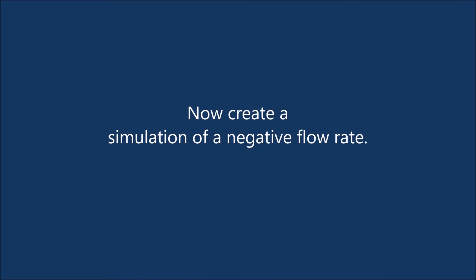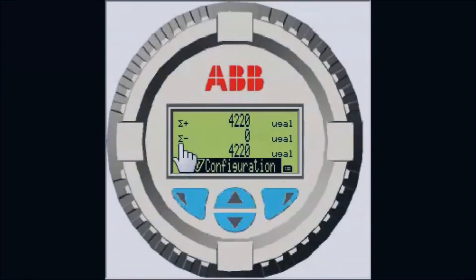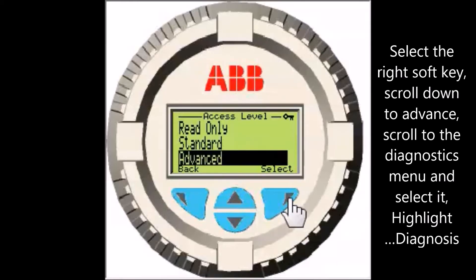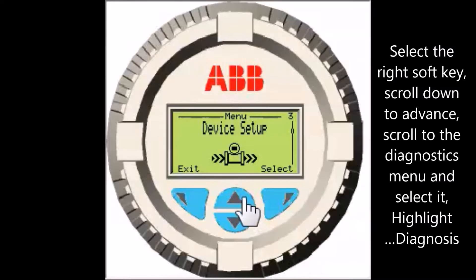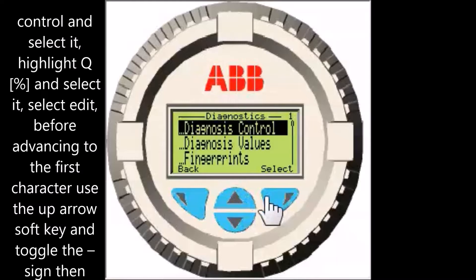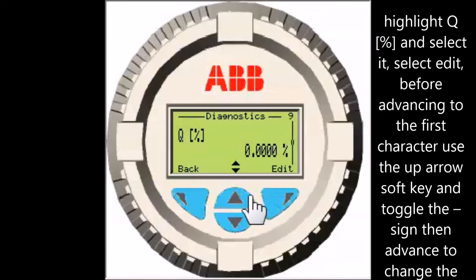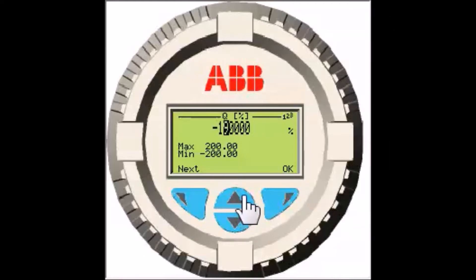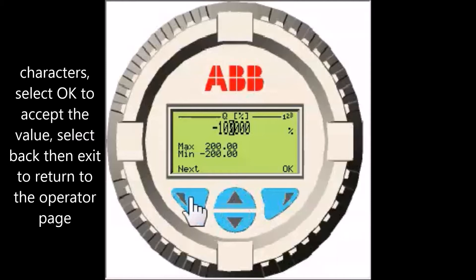Now simulate a negative flow. Select the right soft key, scroll down to advanced. Scroll to the diagnostics menu and select it. Highlight diagnosis control and select it. Highlight Q percent and select it. Select edit. Before advancing to the first character, use the up arrow soft key and toggle the minus sign, then advance to change the characters. Select OK to accept the value. Select back, then exit to return to the operator page.